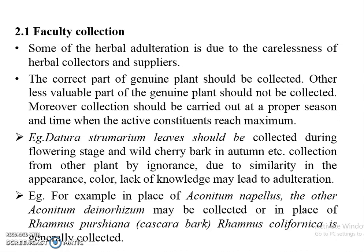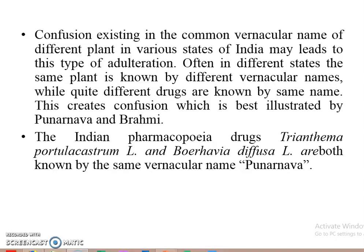For example, in place of aconitum, other species may be collected, or in place of ranunculus. Confusion existing in the common vernacular names of different plants in various states of India may lead to this type of adulteration. Often in different states, the same plant is known by different vernacular names, while quite different drugs are known by the same name — this is best illustrated by the examples of Punarnava and Brahmi.